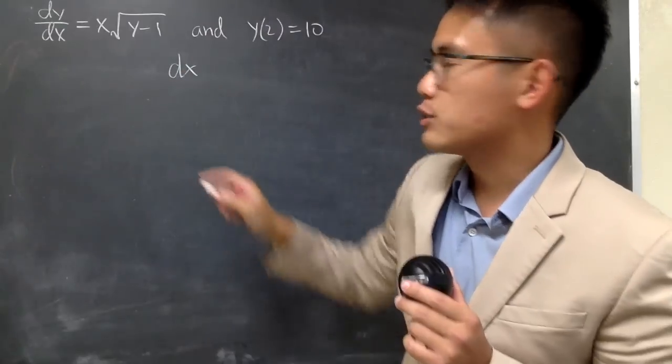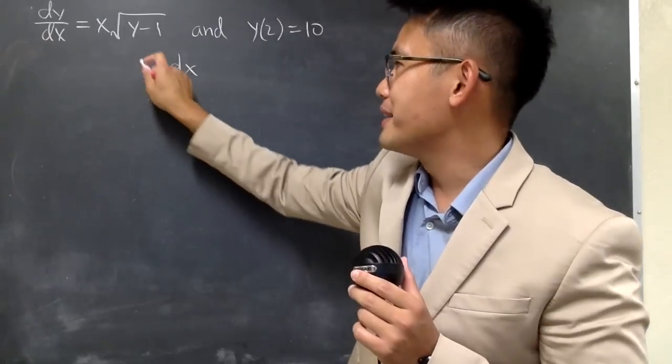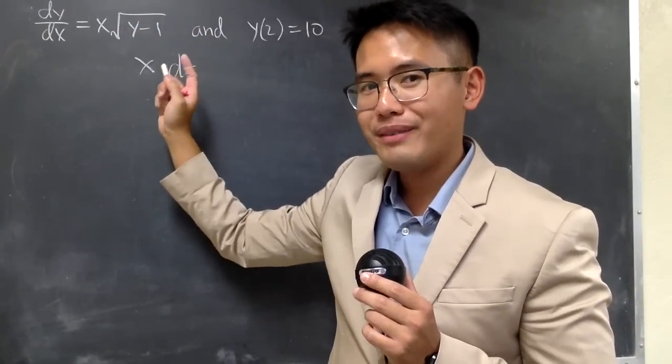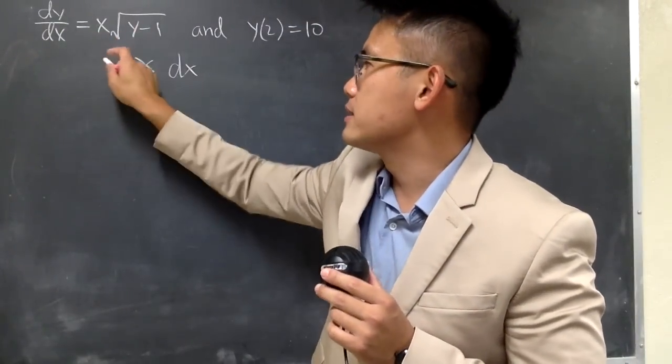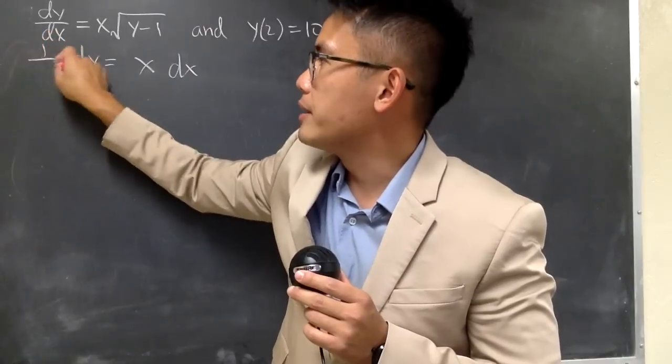So we will have the dx right here and you want to keep the x right here. And I would like to bring the square root of y minus 1 to the other side and we can do so by dividing both sides by this. So we get the dy still on the left-hand side. This will be in the denominator.